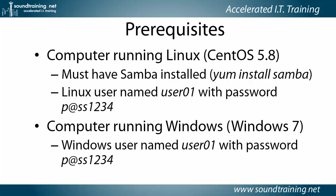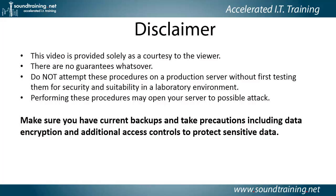Here are the prerequisites. To follow along exactly, you'll need a computer running Linux — I'm using CentOS version 5.8 — with Samba installed. If you don't have it, use 'yum install samba'. You'll also need a Linux user named user01 with a password of p@ss1234. You'll need a computer running Windows — I'm using Windows 7 in a virtual machine — and a Windows user also named user01 with the same password. Please note the disclaimer: this video is provided as a courtesy with no guarantees. Don't attempt these procedures on a production server without first testing in a lab environment. Performing these procedures, even correctly, may open your server to possible attacks, so ensure you have current backups, data encryption, and additional access controls to protect sensitive data.